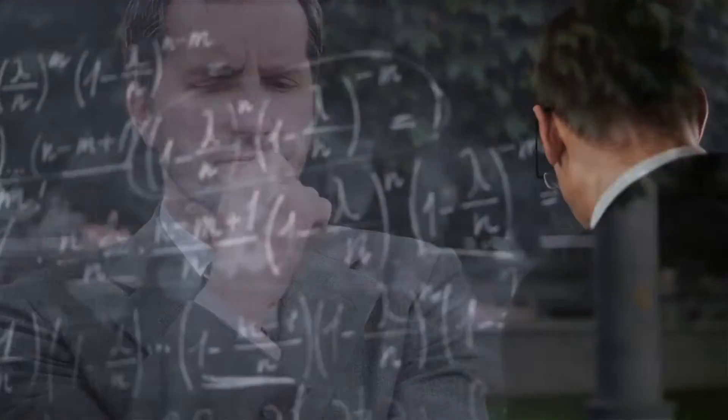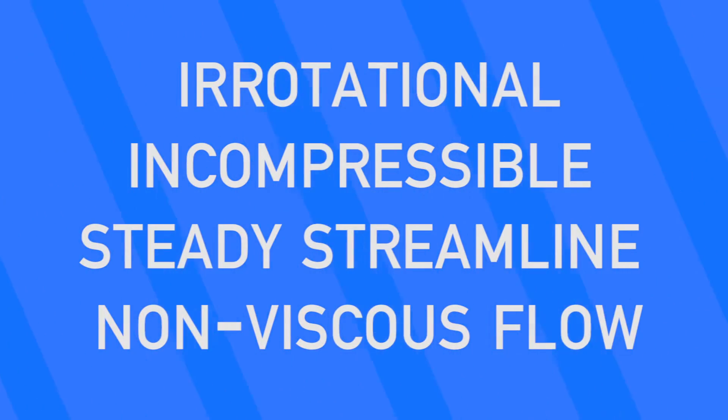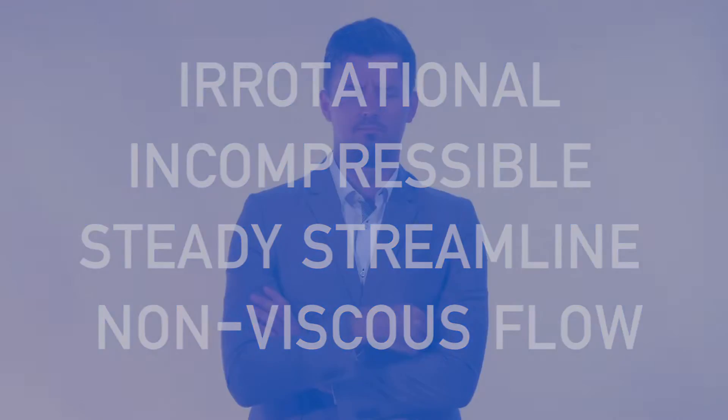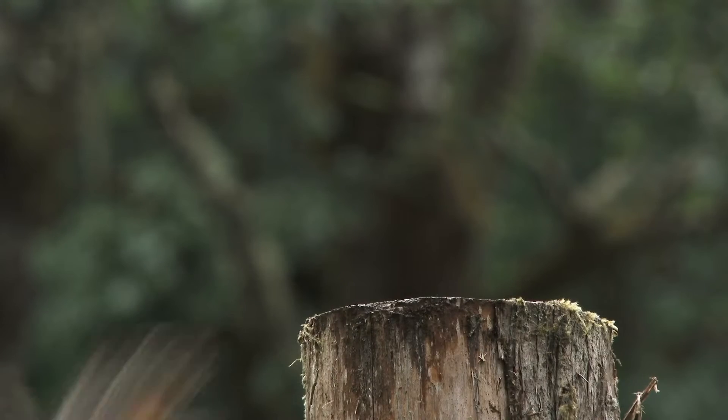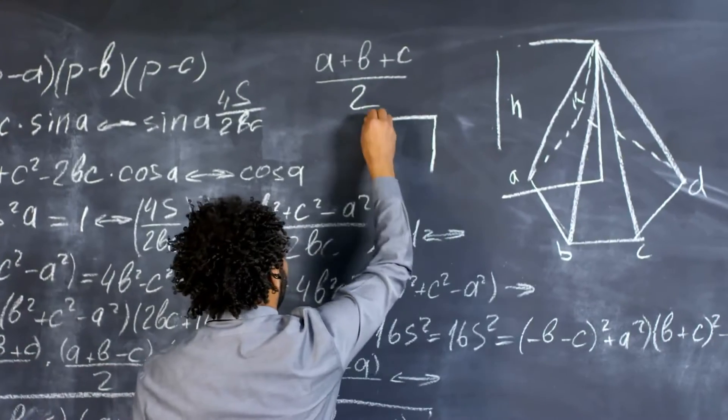Now that I've defined the terms, we're going to need to make some assumptions because, like I said, fluid dynamics is complicated. For learning the physics, we're going to assume irrotational, incompressible, steady-streamline, non-viscous flow. If you ask why, it's because if we don't make those assumptions, the math gets squirrely and fast. So let's move on to the actual math.